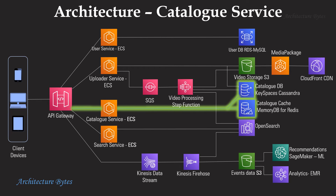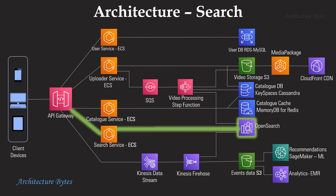When the client needs a list of video titles to display, it sends a request to the catalog service, which fetches it from the catalog cache — MemoryDB for Redis. In case data is not found in cache, it fetches it from the catalog database, which is Amazon Keyspaces. The search service fetches data from OpenSearch. OpenSearch indexes video metadata and clickstream data. Video metadata is ingested into OpenSearch during video processing.